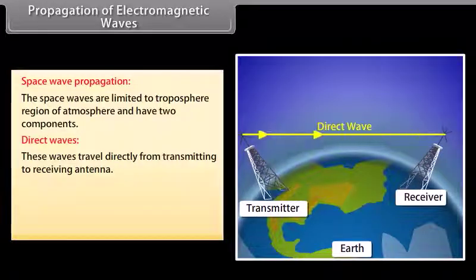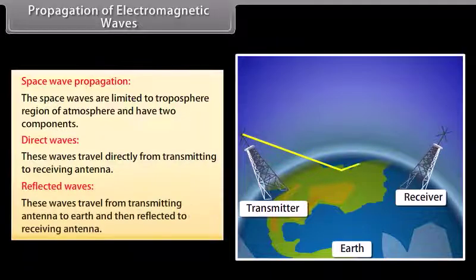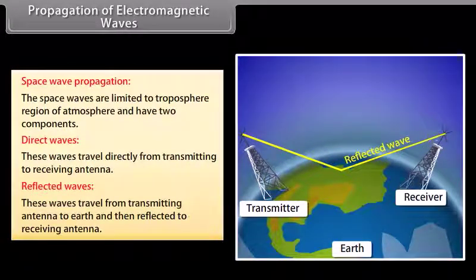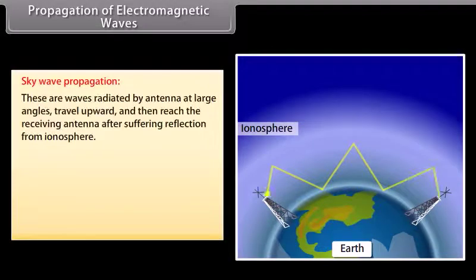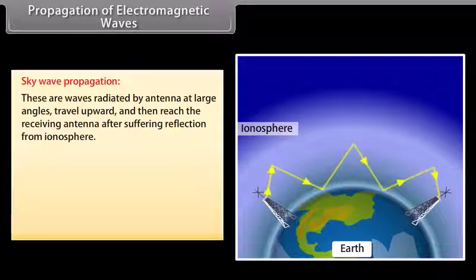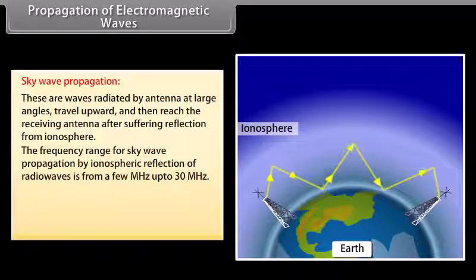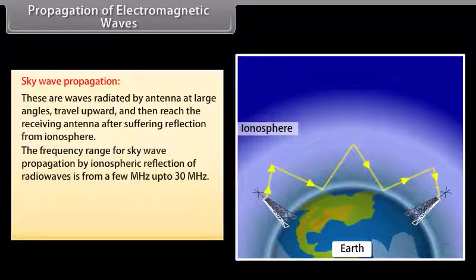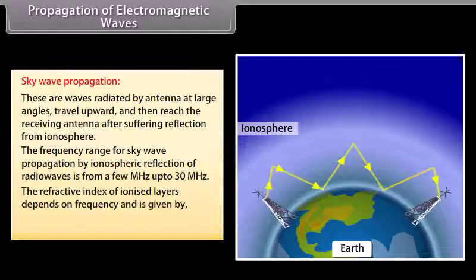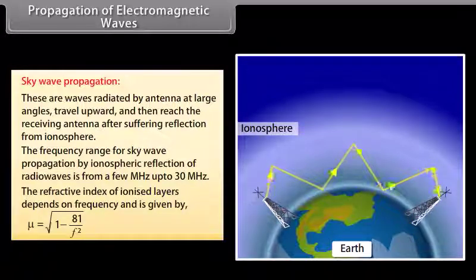Space wave propagation: space waves are limited to the troposphere region of the atmosphere and have two components — direct waves, which travel directly from the transmitting to the receiving antennae, and reflected waves, which travel from the transmitting antennae to Earth and then reflect to the receiving antennae. Sky wave propagation: these are waves radiated by antennae at large angles that travel upward and reach the receiving antennae after reflection from the ionosphere. The frequency range for sky wave propagation is from a few MHz up to 30 MHz, and the refractive index of ionized layers is given by √(1 − 81/F²).